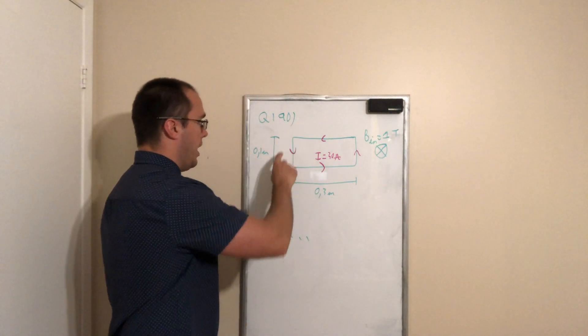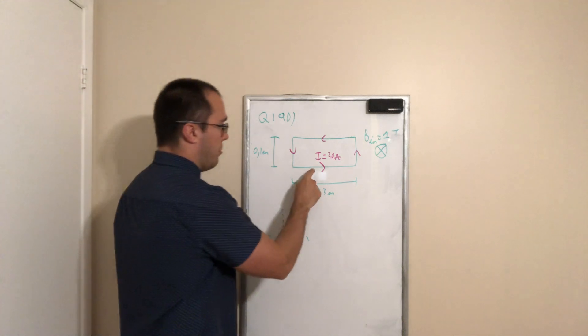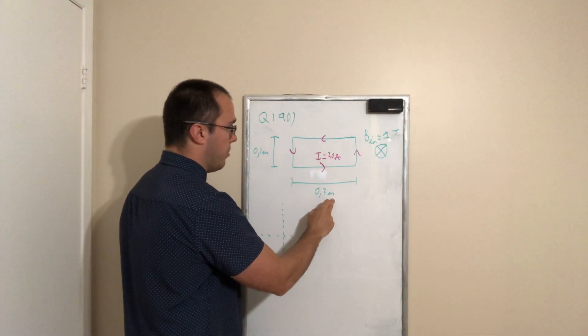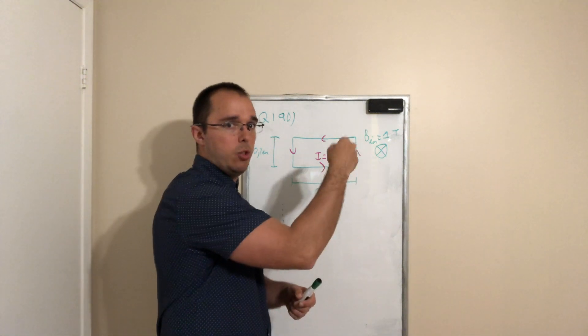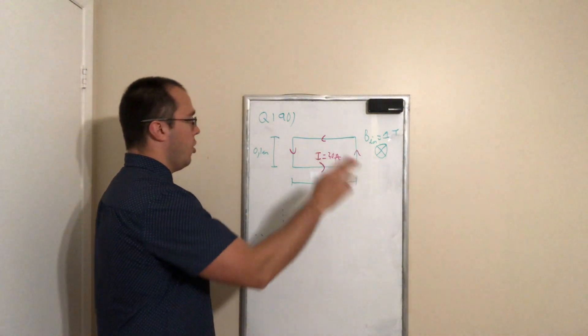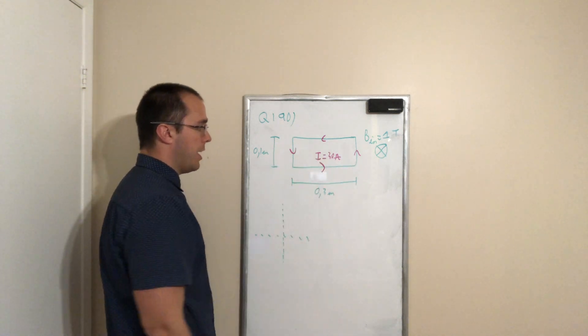So the rectangular frame we are seeing has a left and right side of 0.1 meter, has a bottom and top side of 0.3 meter. We are told that there's a one Tesla magnetic field pointing into the page, and we have a current of 30 ampere moving counterclockwise here.